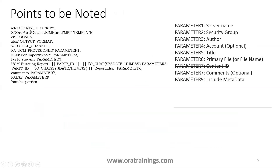In the bursting query, the first column is the key — party ID in our case. The next column is the exact template name used when loading the template in the report. Then comes the locale of the template — for example en-US or another language code. Make sure you specify the appropriate locale. The output format in our case is XLSX because we want Excel output.